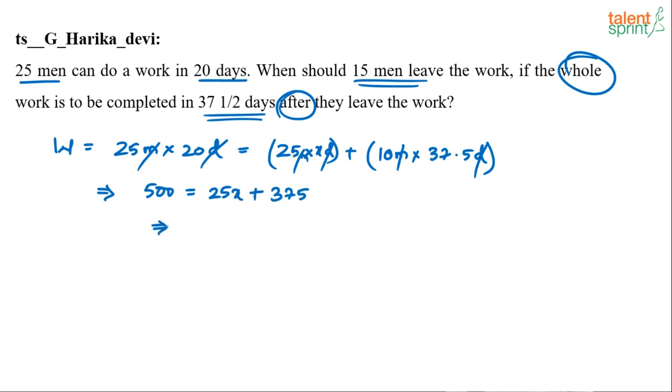So what will be this? 500 minus 375 is 125. 25X equals to 125, X is equal to 125 by 25 which is 5. 5 days will be the answer.